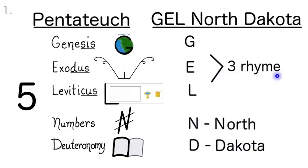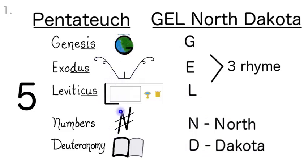The first three books rhyme: Genesis, Exodus, Leviticus. And it goes together like this — 5 Gel, North Dakota, Genesis, Exodus, Leviticus, Numbers, Deuteronomy.